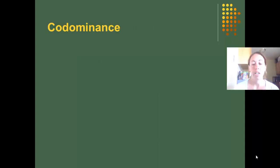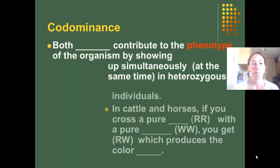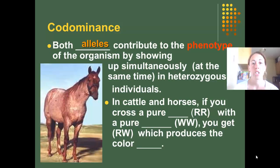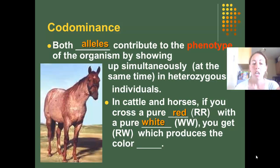For codominance, which is another exception to Mendel's Laws, both alleles contribute to the phenotype of an organism by showing up simultaneously in heterozygous individuals at the same time. So in cattle and horses, if you cross a pure red horse with a pure white horse, you will get a horse which will have a roan color.